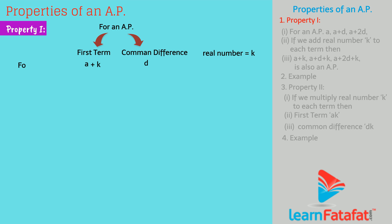For the new AP, the first term is a plus k and common difference is d. For an AP: a, a plus d, a plus 2d.